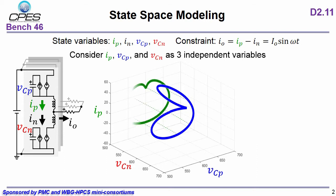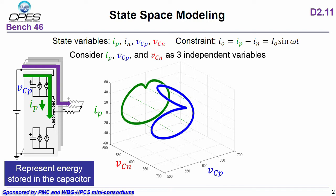If we project the trajectory onto IP and VCP's plane, we basically focus on the energy in the upper arm. So this state-plane represents the energy stored in this capacitor.